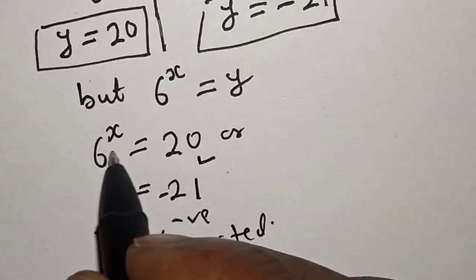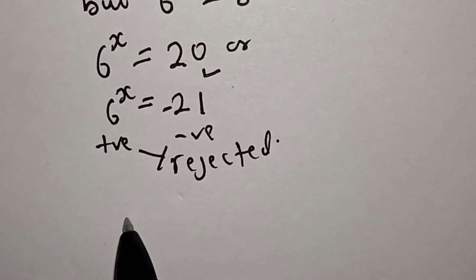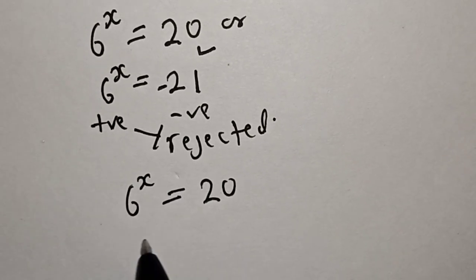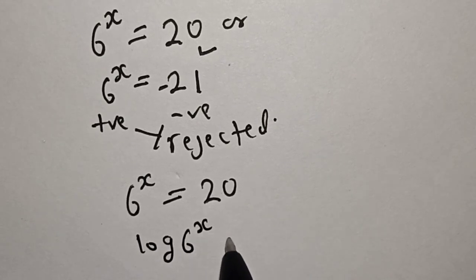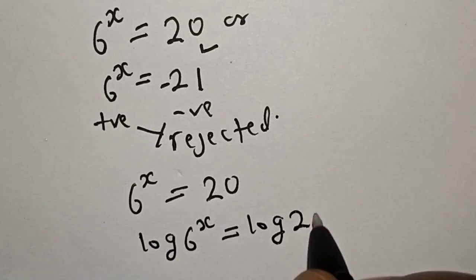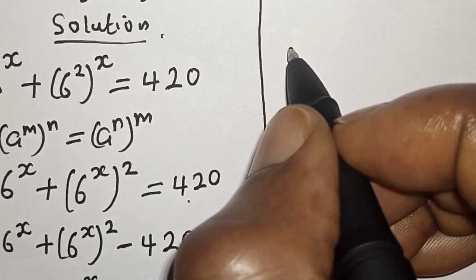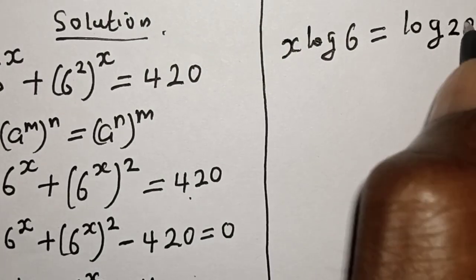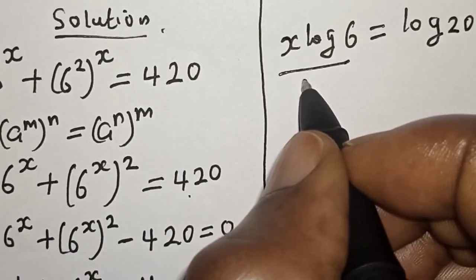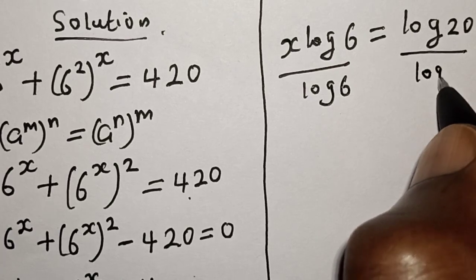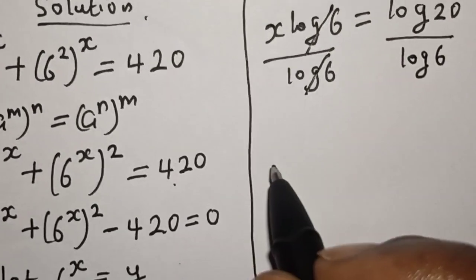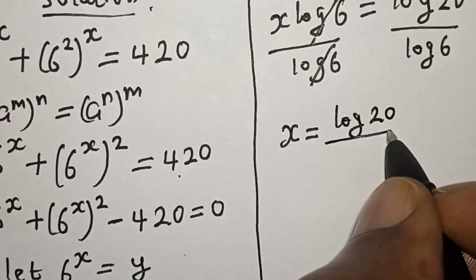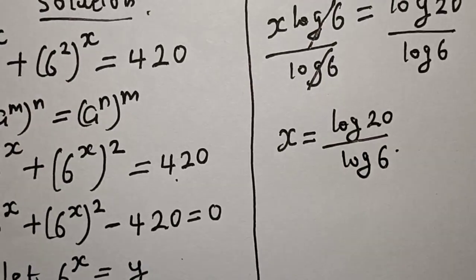The only valid solution is 6 raised to power s equals 20. Taking the log of both sides, log of 6 raised to power s equals log 20. This gives s times log 6 equals log 20. Dividing both sides by log 6, we get s equals log 20 divided by log 6.